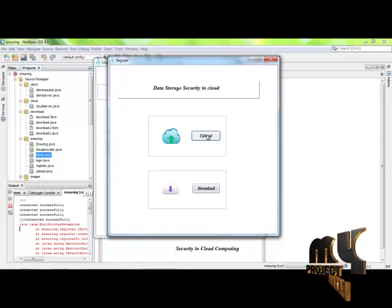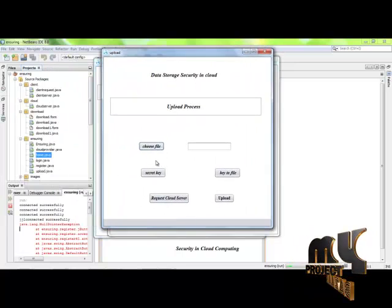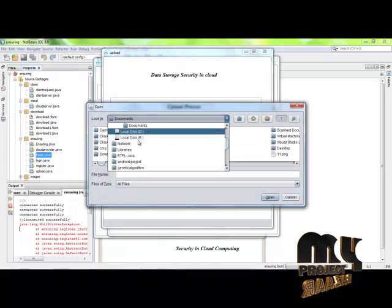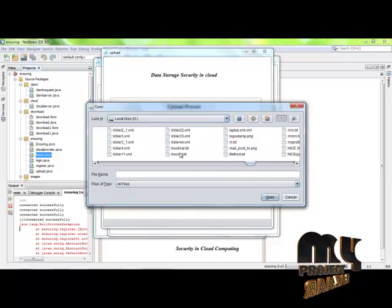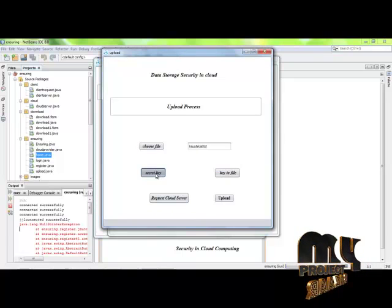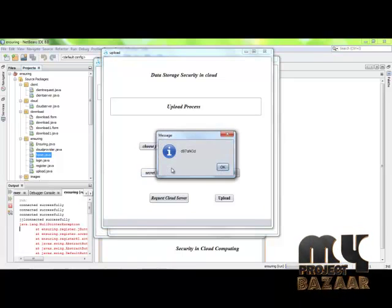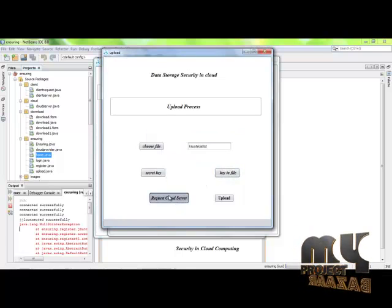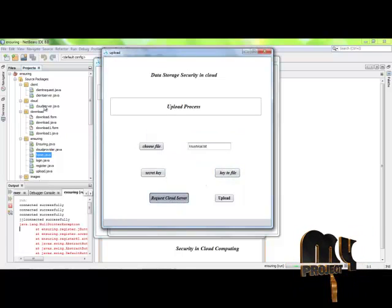There are two processes: upload and download. Click on the upload process. Choose any of the files. For example, I am choosing a text file. The key can be generated and the file can be assigned with the key.